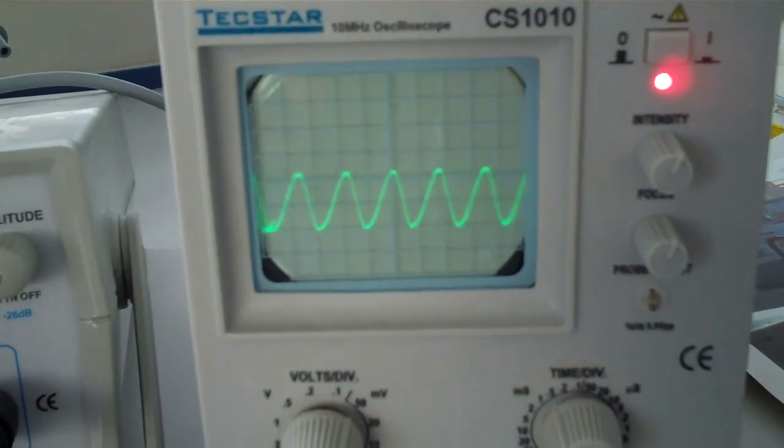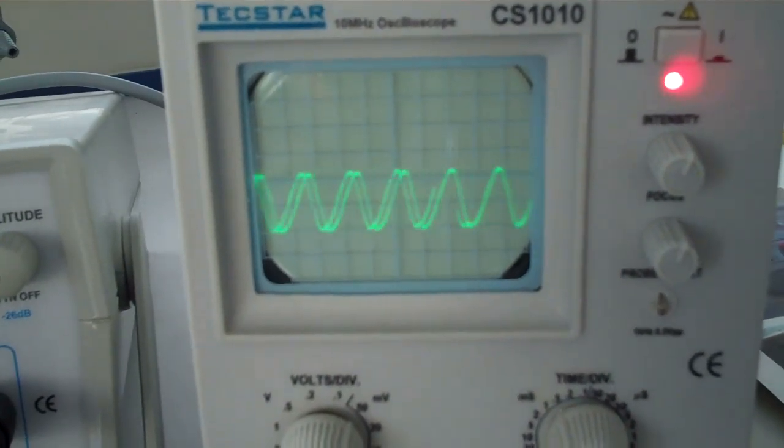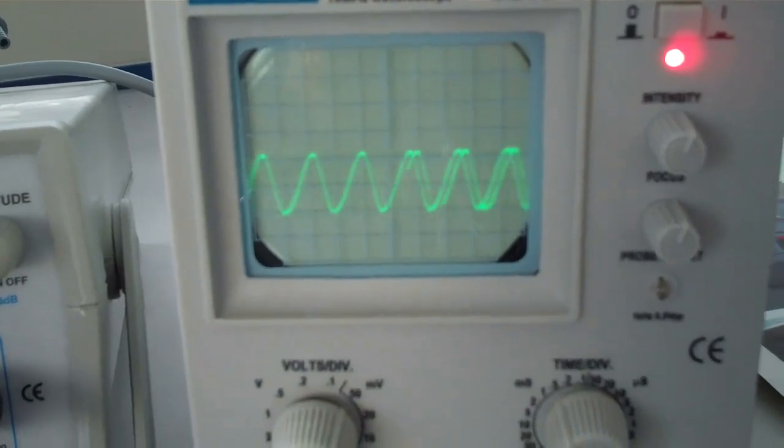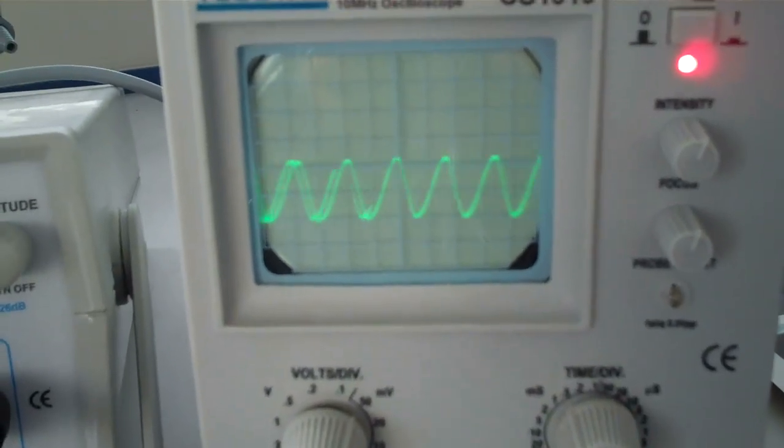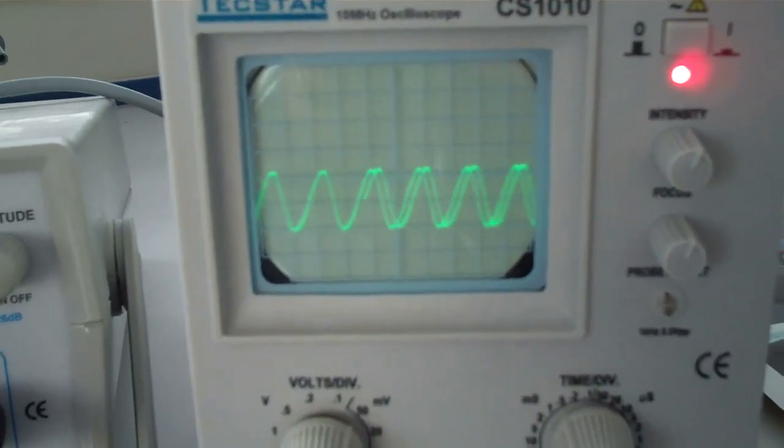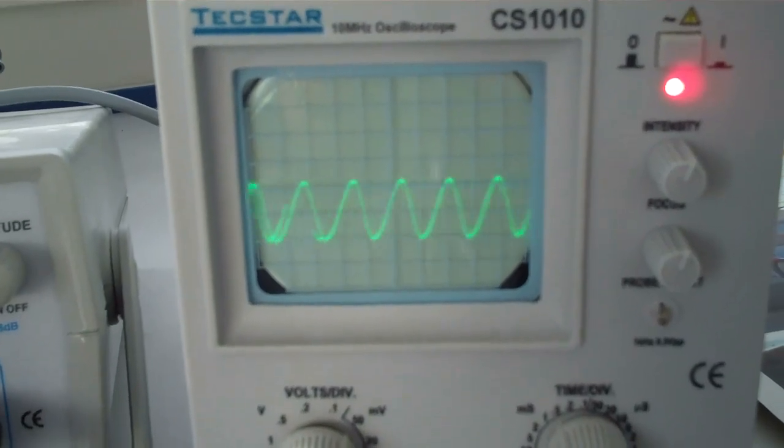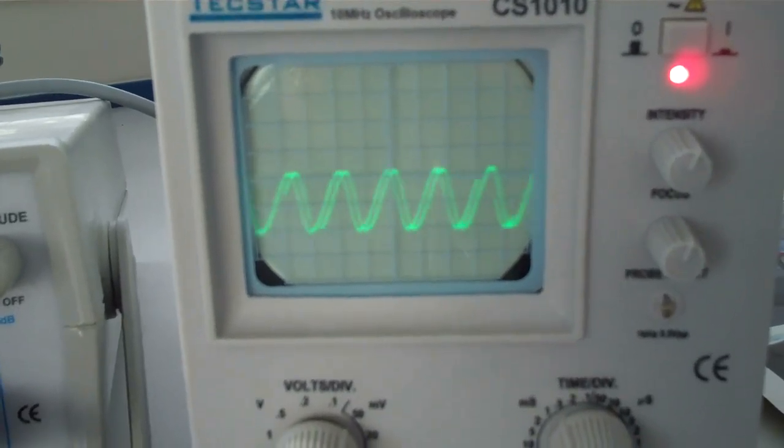Now on this oscilloscope it looks like we have a transverse wave but what actually has happened is they've taken the longitudinal wave and to make it easier to see, they've converted it to a transverse wave.